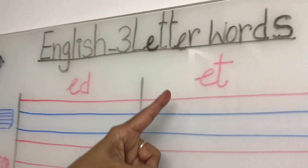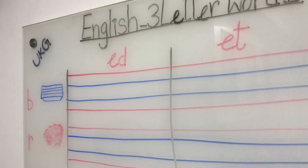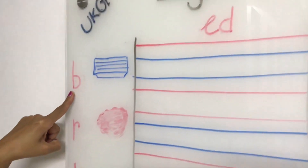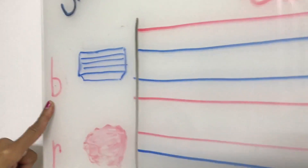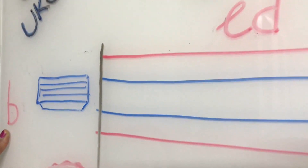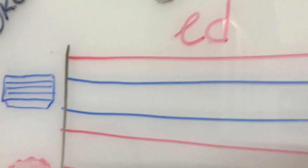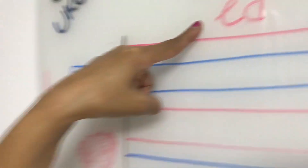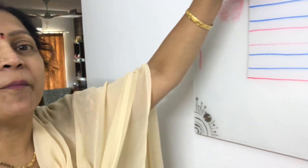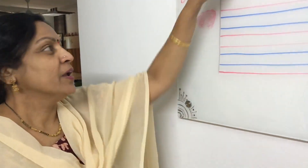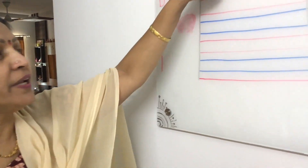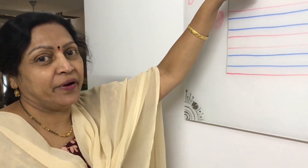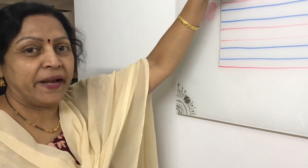ED words. See here, children. What is this letter? This is B — small b. When you join this B to ED we can make BED. When you join the B letter to ED we can make BED. Okay, it will become BED.